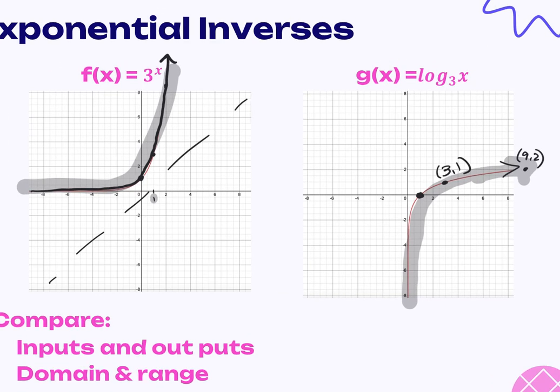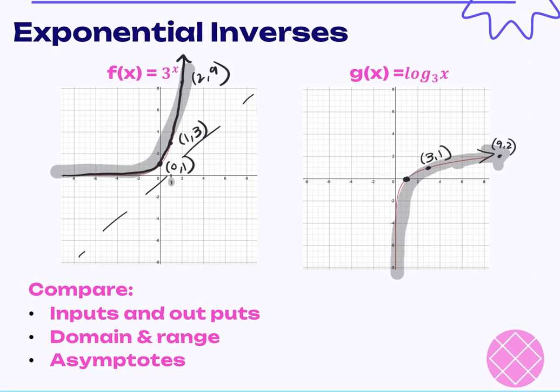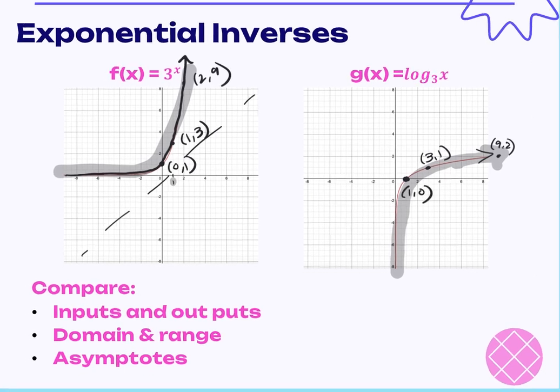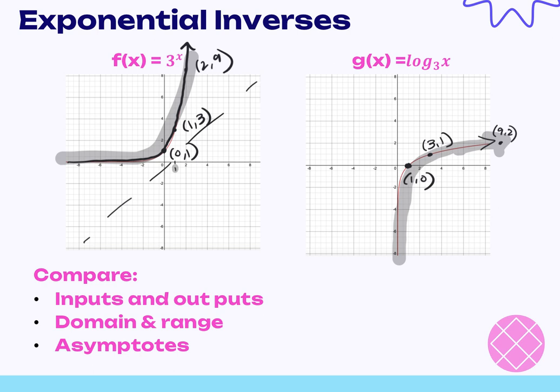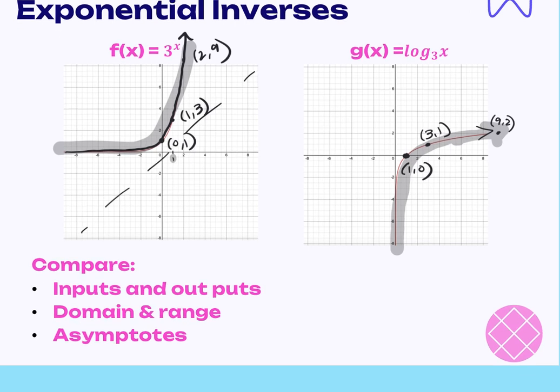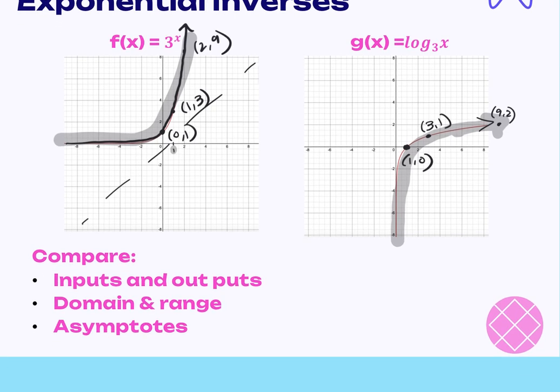Looking at just those three points: (0,1), (1,3), (2,9) — notice the x and y relationship? They're inverses — you take your x's and y's and switch them. So one strategy to graphing logs is to graph the exponential inverse and then flip your x and y values. The other approach is to plug in for y instead of x. I'll teach you both ways; there are times when one is easier than the other.